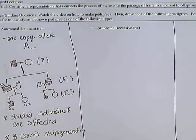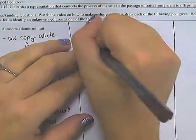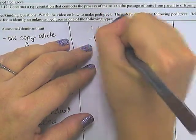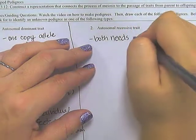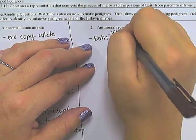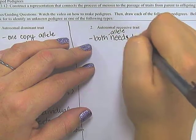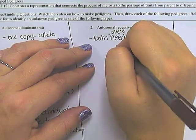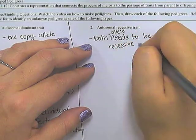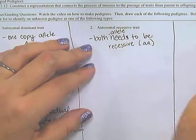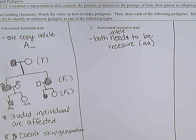All right, the next one we're going to look at is autosomal recessive, and in this case, both alleles need to be recessive. So, in other words, homozygous recessive, and typically we write that as lowercase, lowercase, and I'm going to use the letter A as an example.